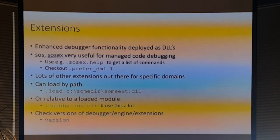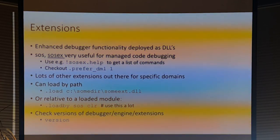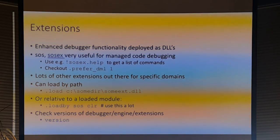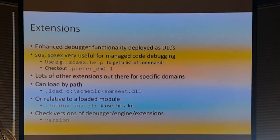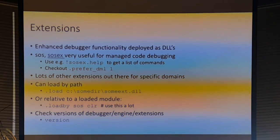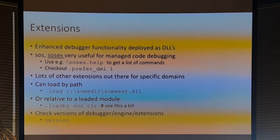If you're using extension DLLs, typing !extensionname.help will show you all the commands. The .prefer_dml command — this is what passes for innovation in debuggers — enables 'debugger markup language.' .prefer_dml basically means that listings in the debugger give you hot links you can click on, like a cheap substitute for a GUI experience. Some people like it, some don't. I personally don't like it because it makes it harder to copy output out of the debugger.